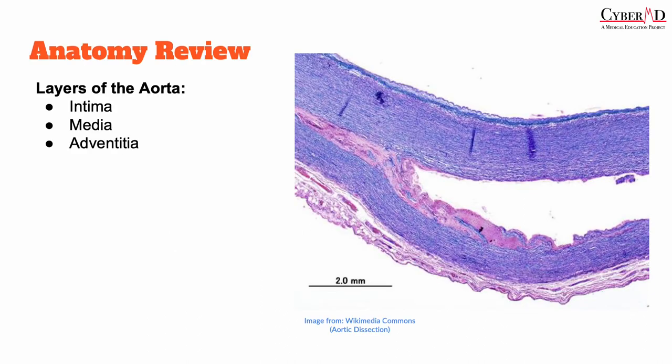First, before we go too far, let's review the layers of the aortic wall. The aorta consists of three layers: the intima, the media, and the adventitia. The intima is the innermost layer and provides a smooth surface for blood flow. The media is the middle layer, allows expansion and contraction of the artery, and contains smooth muscle. Finally, the adventitia is the outermost layer, providing support and structure.